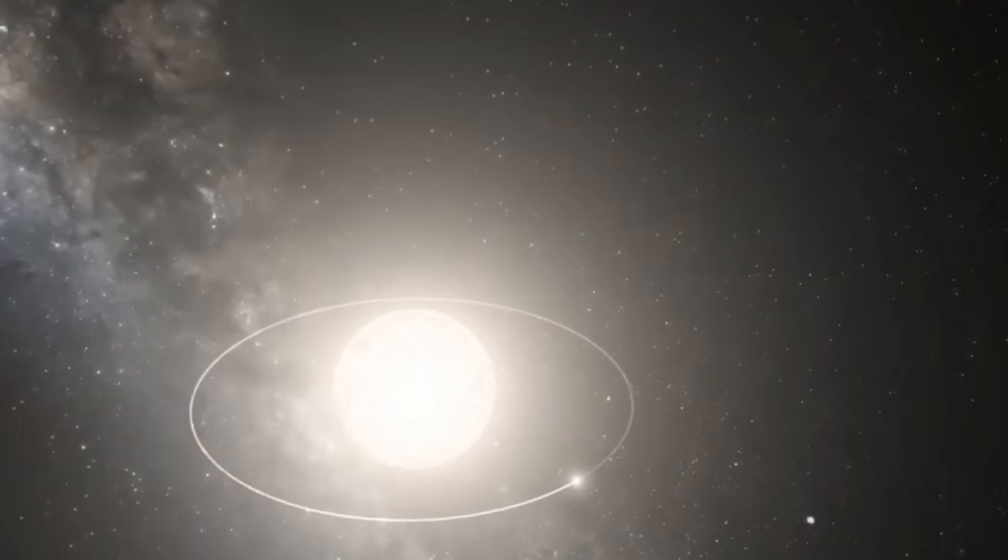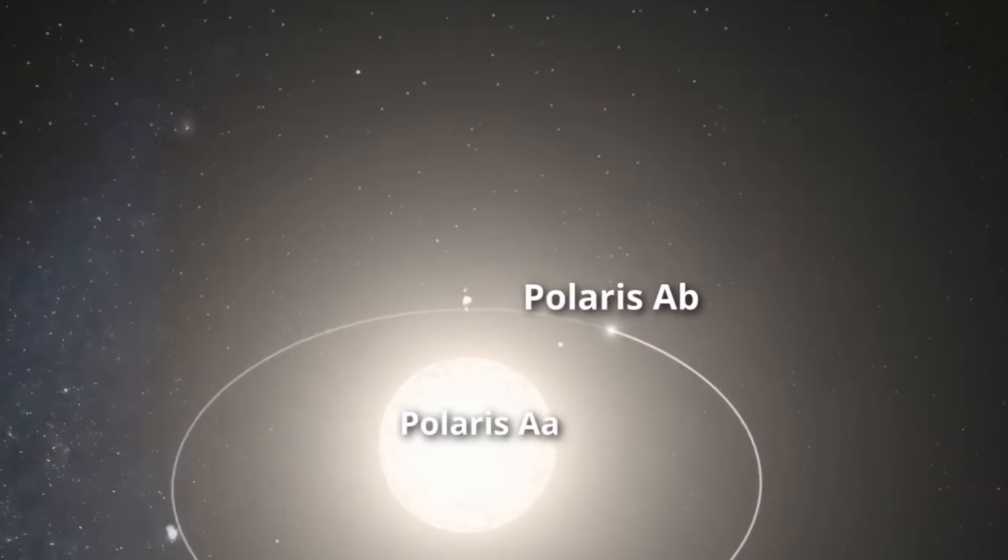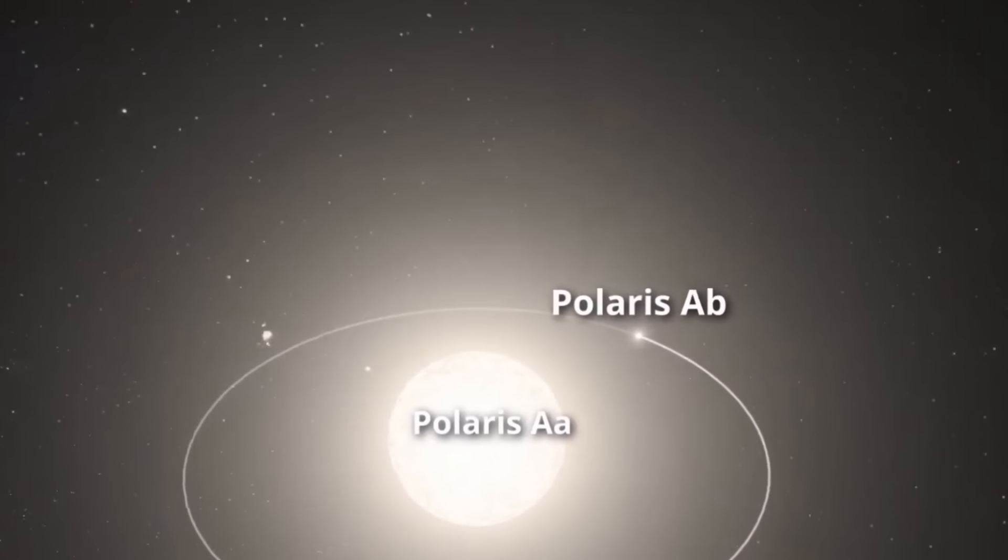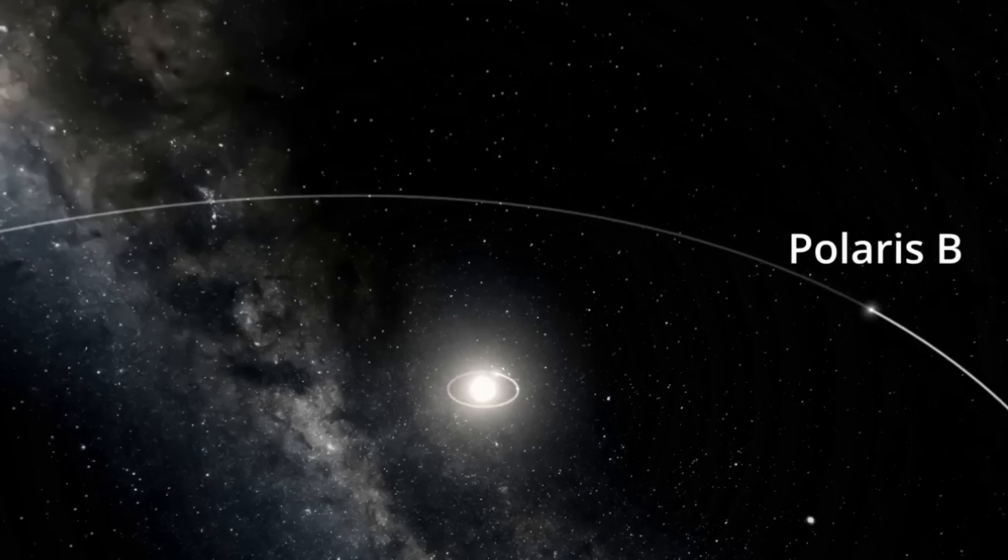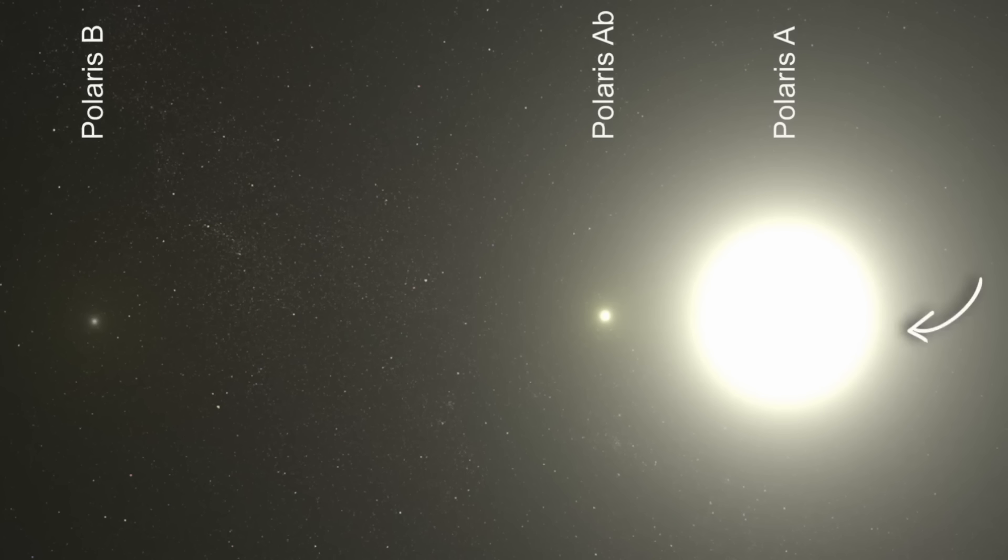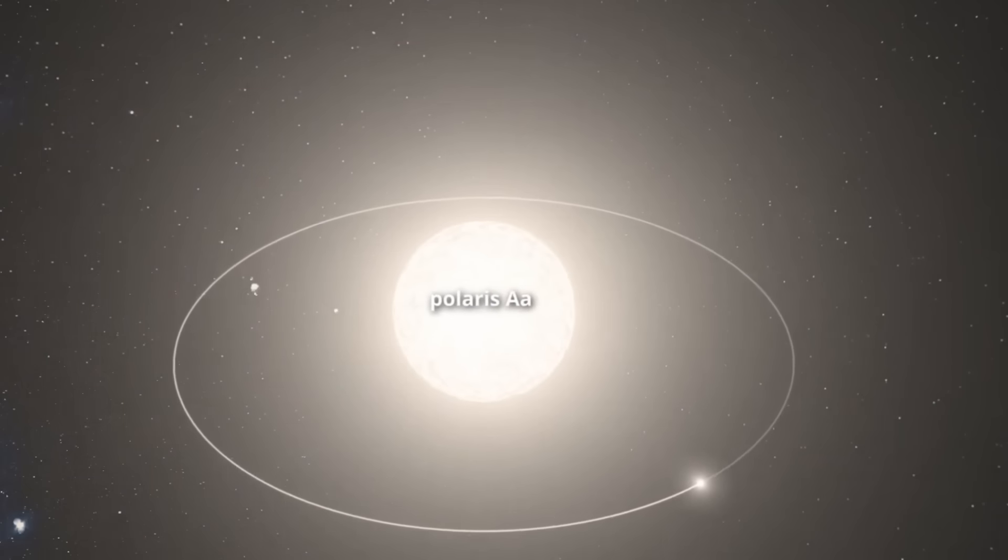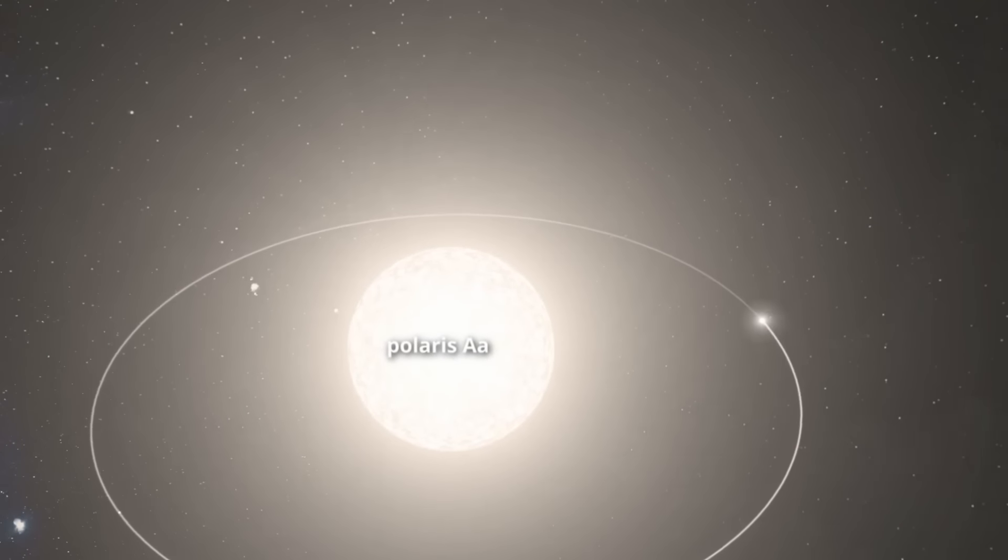It is often perceived as a solitary star, but it is actually part of a complex triple star system. The primary stars, Polaris AA and Polaris AB, appear as a single star to the naked eye, while a third companion, Polaris B, orbits the binary pair. The interactions among these stars create a gravitational pull, shaping their orbits and influencing their behaviors.